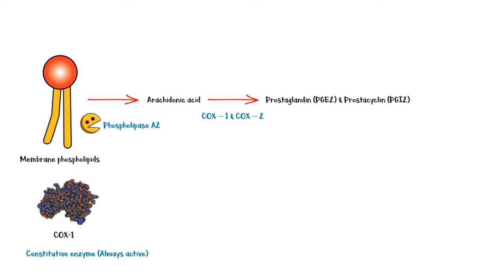COX-1 is a constitutive enzyme, which means it is always active. By contrast, COX-2 is an inducible enzyme. In other words, it should get activated to elicit its effects.